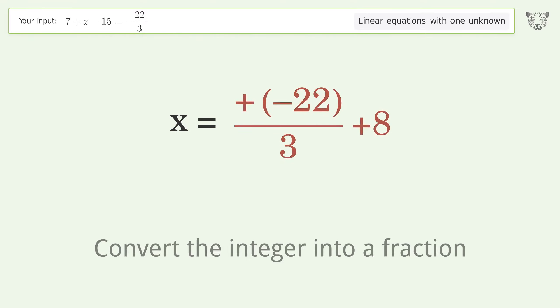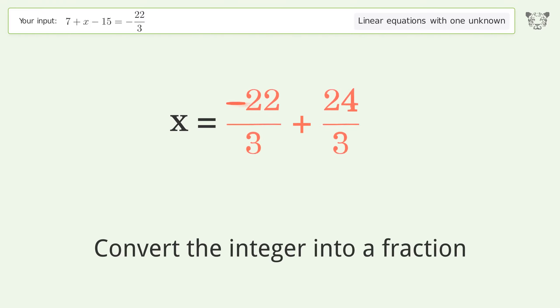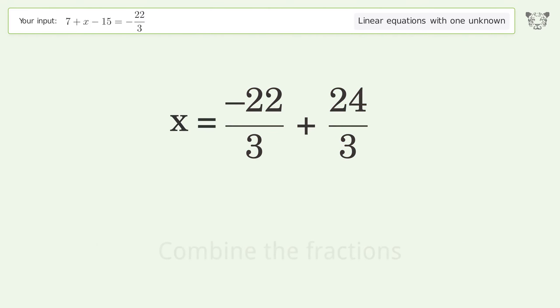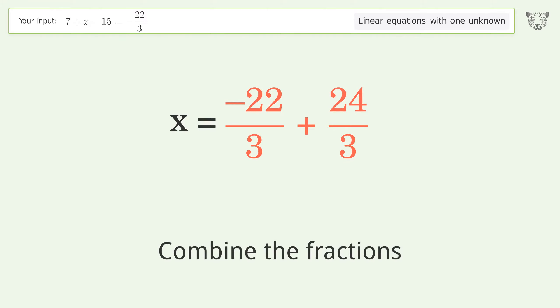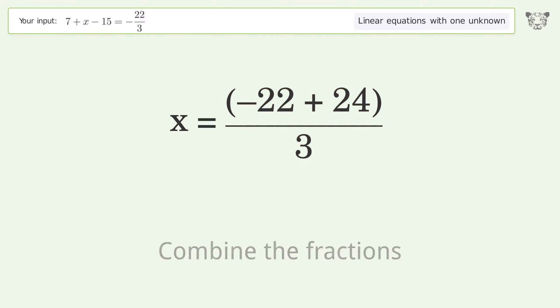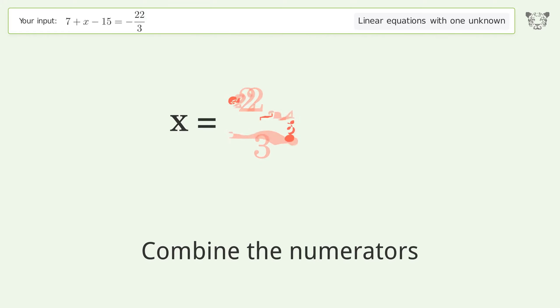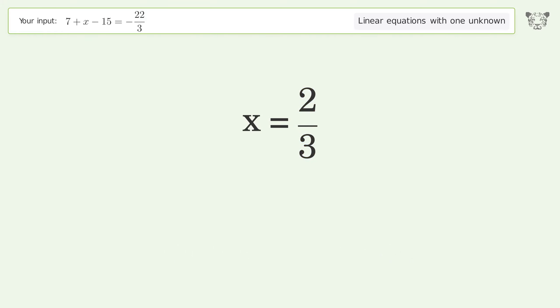Convert the integer into a fraction. Combine the fractions. Combine the numerators. And so the final result is x equals 2 over 3.